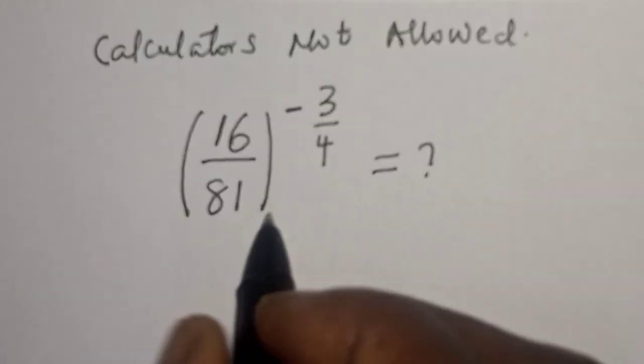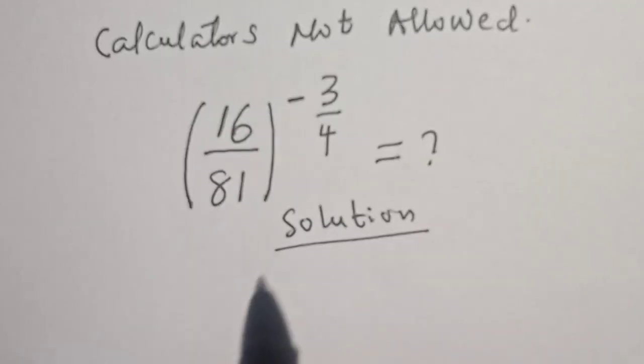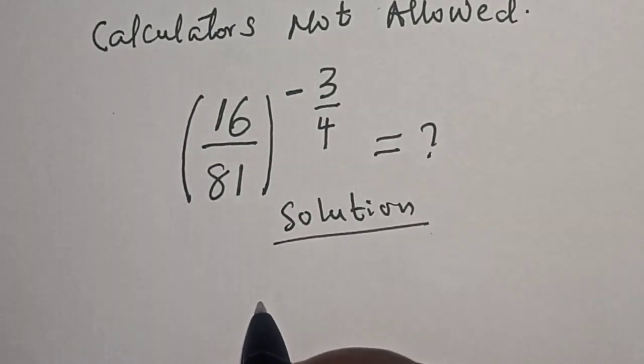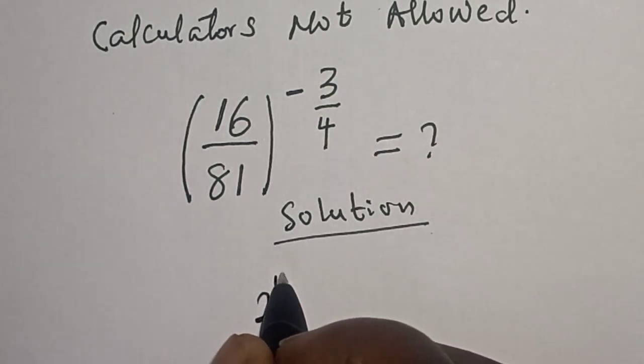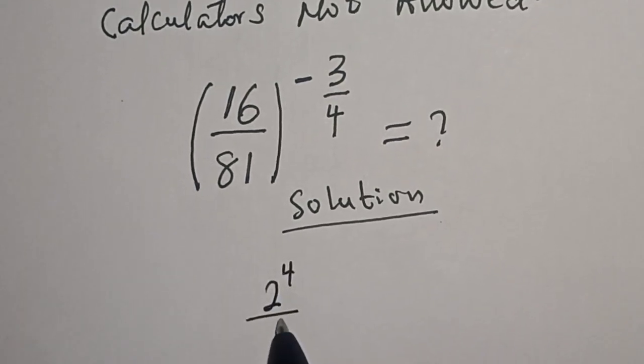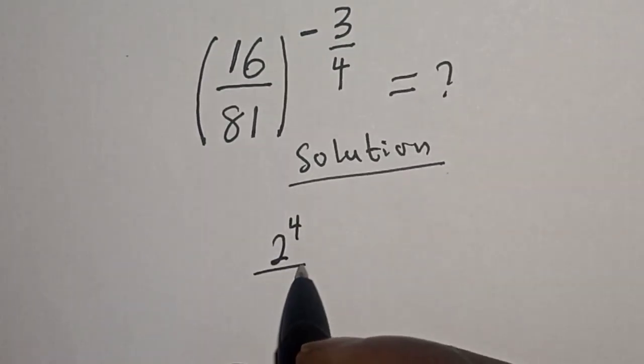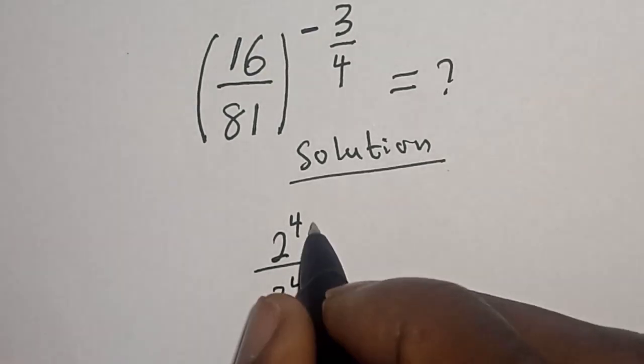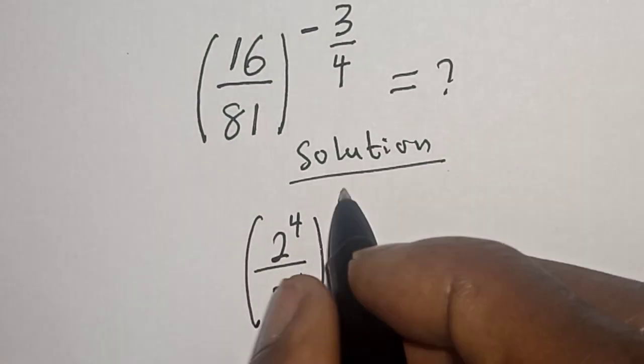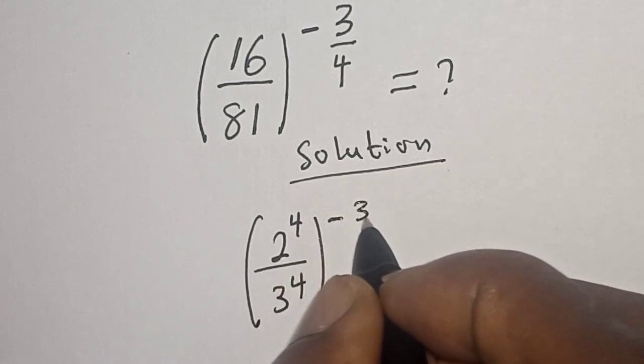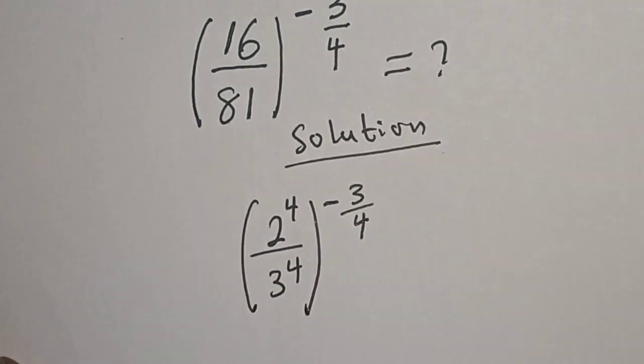Take notes, calculators not allowed. Thank you. Solution: 16 can be written as 2 raised to power 4 divided by 81 is 3 raised to power 4, then all raised to power minus 3 over 4.